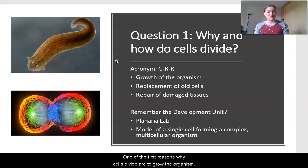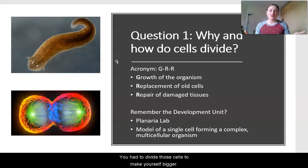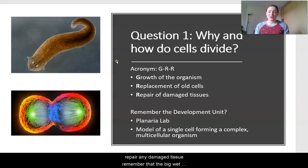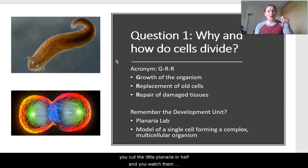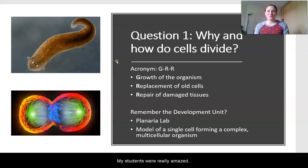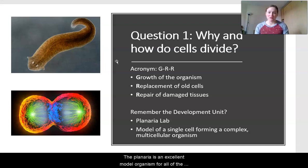One of the first reasons why cells divide is to grow the organism. When you were little and then you grew big, you had to divide those cells to make yourself bigger. You also divide cells in order to replace old cells and to repair any damaged tissue. Remember the big wet lab we did in this unit — the planaria lab — where you cut the planaria in half and watched them grow back. The planaria is an excellent model organism for all of the stages of development.